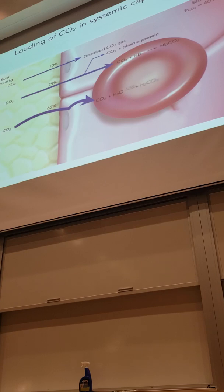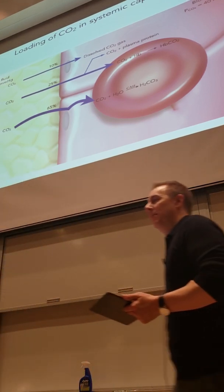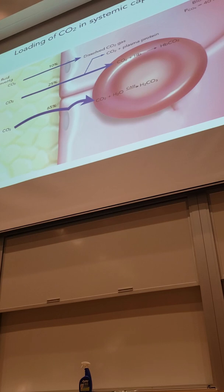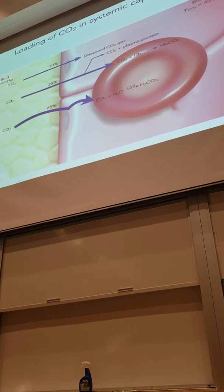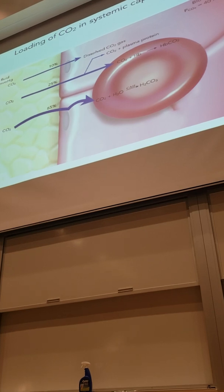It combines with water with the help of carbonic anhydrase. So CAH here, carbonic anhydrase. We'll see this again in other parts of the body. This is a very common enzyme that helps facilitate this reaction. And what do we get? We get carbonic acid, which dissociates into H+ and bicarbonate.